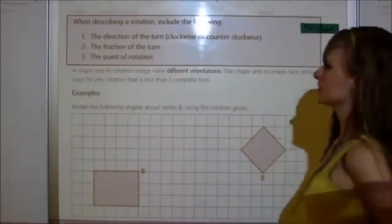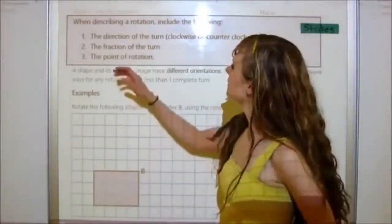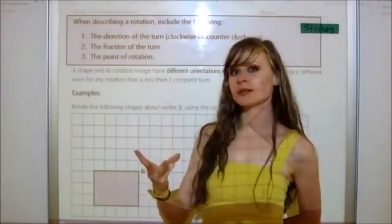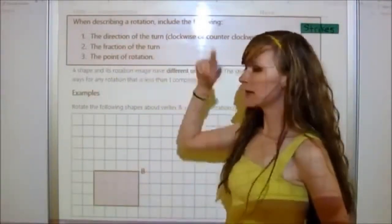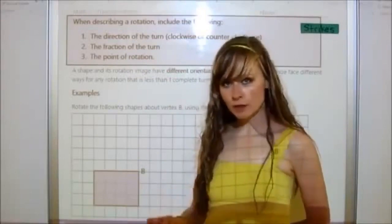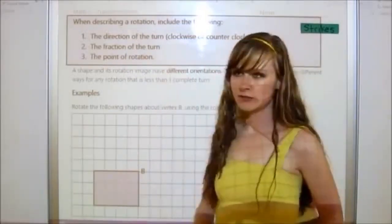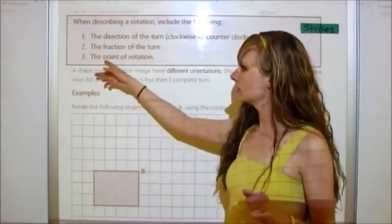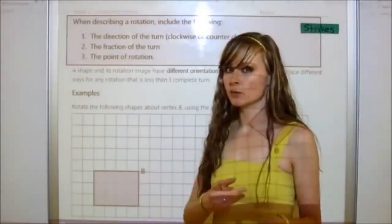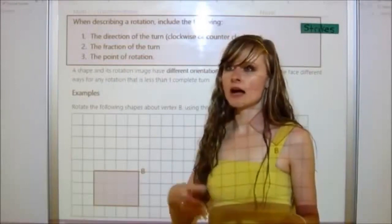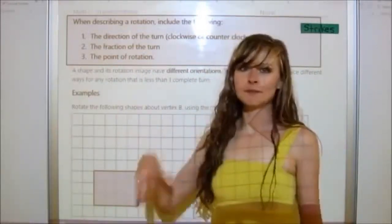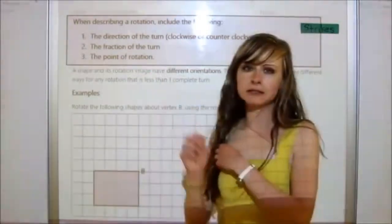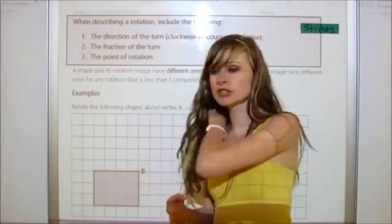Using that information, you need to describe rotations using three things. First, you need to tell the direction of the turn — whether it's clockwise or counterclockwise. Second, you have to say the fraction of the turn: one quarter, one half, three quarters, or one whole. Third, you have to tell the point of rotation — like about the center of the wheel. It's usually going to be a letter on a corner or vertex of a shape.